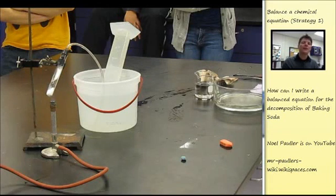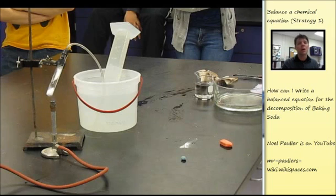Hi everybody. In this video we're going to be taking a look at strategies that you can use in order to write a balanced equation for a chemical reaction. The reaction we're going to look at is the decomposition of baking soda or sodium bicarbonate. It has a chemical formula of NaHCO3. Let's go ahead and take a look at the reaction to identify what the products of this reaction are.